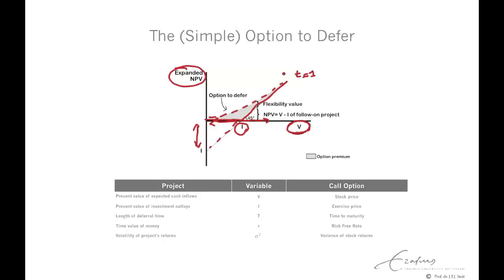That is the current value of the license — the value at t=0. To summarize: we can see the license to develop the oil field as a call option on the underlying value, with the present value of expected cash inflows similar to the stock price. The present value of the investment outlay is the exercise price. The length of the deferral time is the time to maturity. The time value of money is the risk-free rate, and the volatility of project returns is analogous to the variance of stock returns.